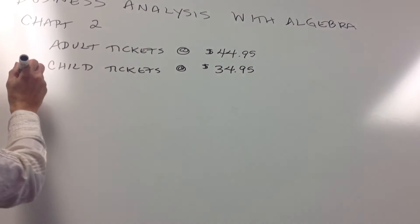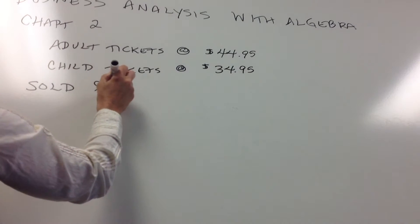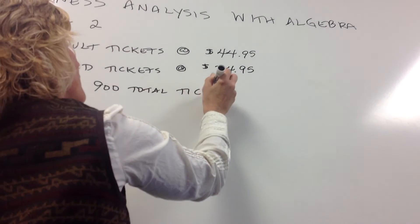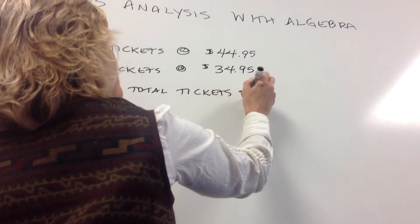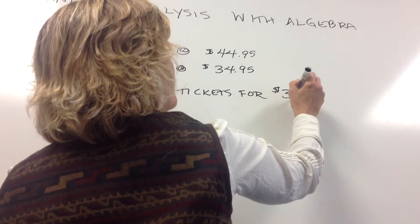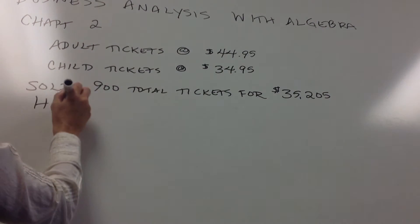If on a day they sold 900 total tickets, and they made a total of $35,205, how many adult tickets were sold?